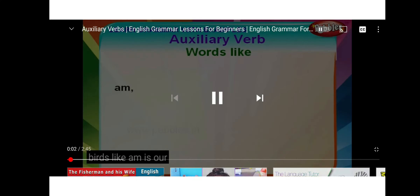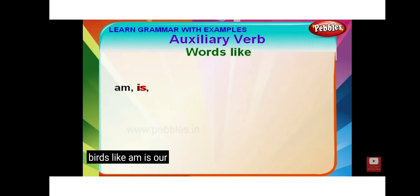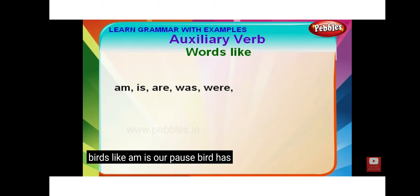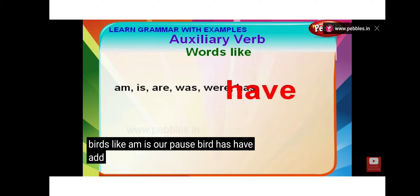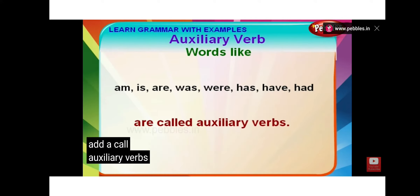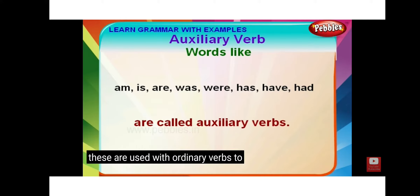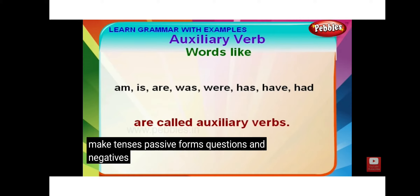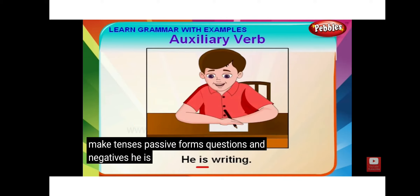Am, is, are, was, were, has, have, had are called auxiliary verbs. These are used with ordinary verbs to make tenses, passive forms, questions and negatives. For example: He is writing.